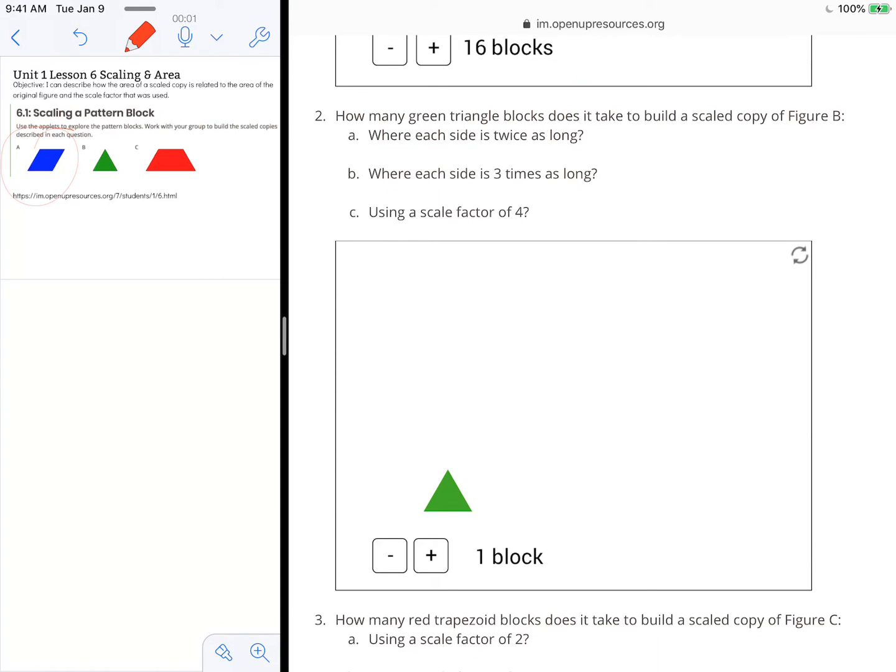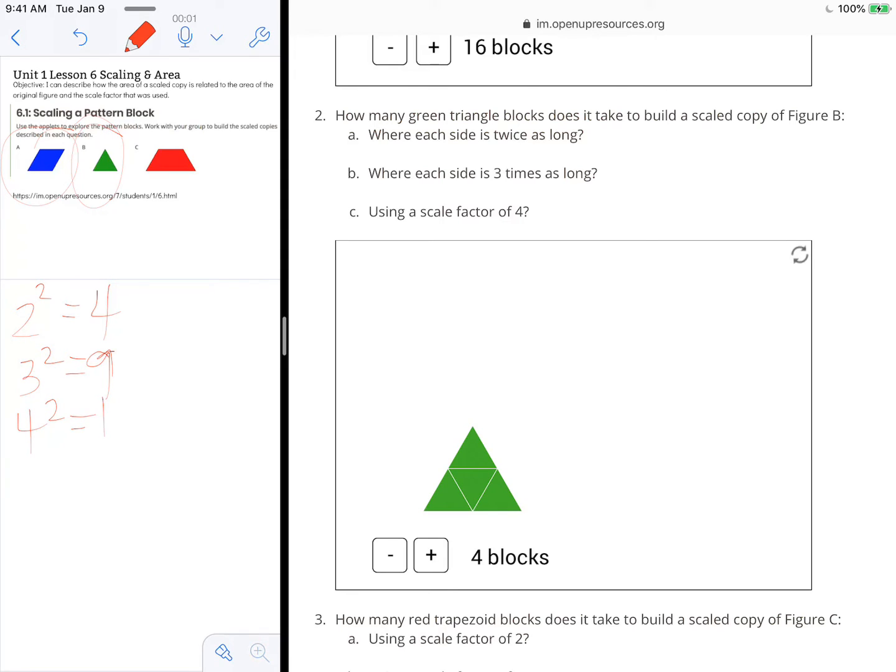I'll scroll down and look at the triangle. I wonder if the triangle will operate in the same way. How many green triangle blocks does it take to build a scaled copy of figure B? So again, looking at figure B here, this triangular shape, we want to keep that same shape overall, where each side is twice as long. So I add another triangle. It's now two times as long as it was before, but it doesn't have the same shape overall. So I'm going to put a triangle in the middle and another triangle on the top so that it has that same overall appearance. You'll notice I got four blocks that time as well. So I'm going to go ahead and track that. I had two squared equals four, three squared equals nine, four squared equals 16. I wonder if that same pattern is going to hold true with these triangles as well.